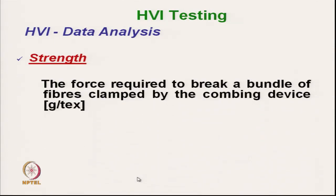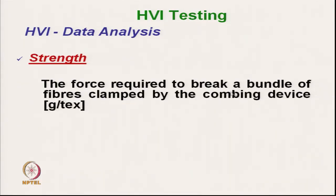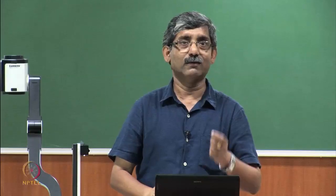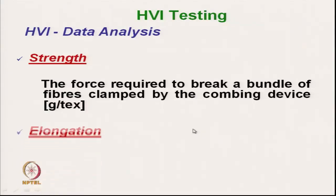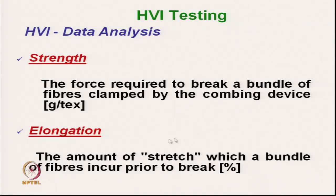Strength is measured as the force required to break a bundle of fibre clamped by the combing device. The same clamp used for fibre length measurement is used here; the fibre is broken and the force required is measured. By measuring the breaking force and taking the mass of the fibre bundle, elongation is also measured — the amount of stretch a bundle of fibre incurs prior to break.